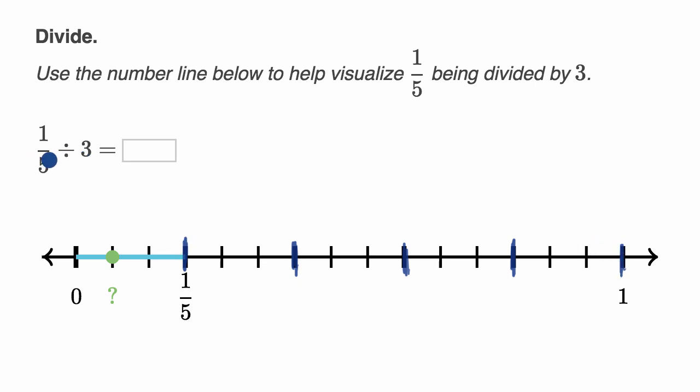But we want 1/5 divided by three. So we took the section from zero to 1/5, and we divide it into three equal sections. And so the first of those sections, this one right over here, that would be 1/5 divided by three. So what is this going to be equal to? Pause this video again and see if you can figure that out.